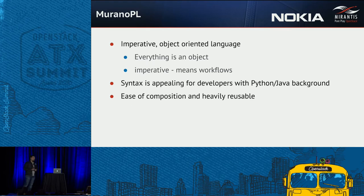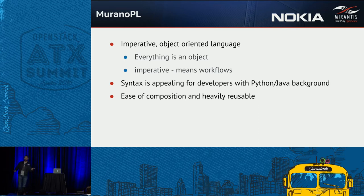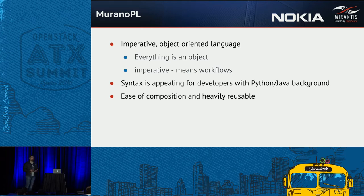MuranoPL is an imperative object-oriented language — everything is an object. Imperative means workflows. In Murano, you natively have a workflow and can specifically say: bring up this cluster, configure this endpoint on this node, go to this node, do this thing, and proceed only after this node completes deployment. MuranoPL is appealing for Java and Python developers because it is really close to any simple object-oriented programming language — Java, Python, C#.